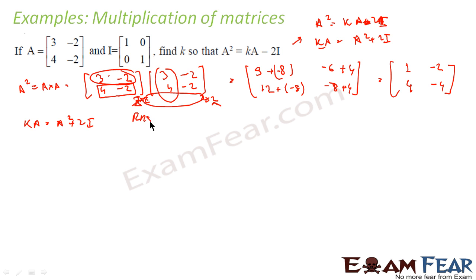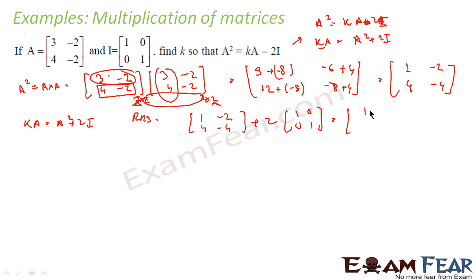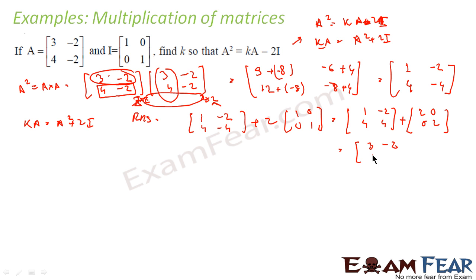Let's find the RHS, which is A² + 2I. A² is [[1, -2],[4, -4]] plus 2I. The identity matrix I is [[1,0],[0,1]], so 2I = [[2,0],[0,2]]. Adding these gives: 1+2=3, -2+0=-2, 4+0=4, and -4+2=-2. So RHS = [[3, -2],[4, -2]].